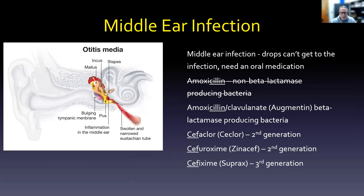You can also work with cephalosporins, which tend to begin with CEF or CEPH. So cefaclor and cefuroxime — those are both second generation. Or you might see cefixime, which is Suprax — that's third generation. What we're really doing with a middle ear infection is treating a resistant infection; we're going to give what you might call a stronger antibiotic. Why not give clavulanate in the first place? Well, you want to reserve it for resistant infections, and also it tends to cause a lot of GI upset, unlike amoxicillin by itself.